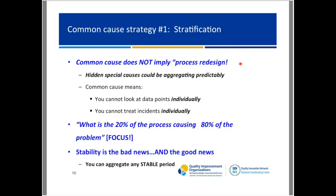Common cause does not necessarily mean you have to redesign your process entirely. Preferably, you'd like to find some things that result in less disturbance to the work culture than a whole new redesign. Hidden special causes can be aggregating very predictably. All common cause means is that you can't look at data points individually. If you're plotting things like falls or med errors, you can't treat everyone as a special cause — you have to group the data to see if there are underlying patterns.